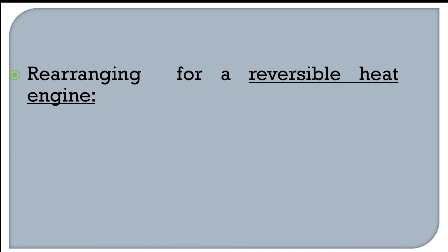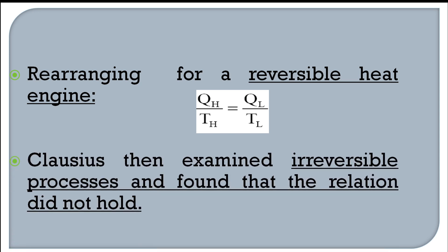Rearranging that expression for a reversible heat engine: QH/QL = TH/TL can be rewritten as QH/TH = QL/TL. So the ratio of heat transfer Q to absolute temperature T — where T is on the absolute temperature scale — is a consistent relationship.